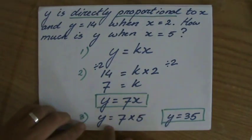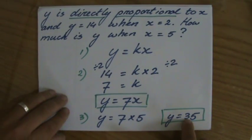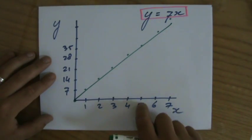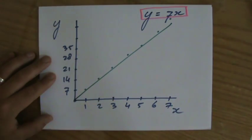Then you substitute because they want to know what y is when x is 5. Well, y is 35. And looking at the graph, when x is 5, y indeed is 35.